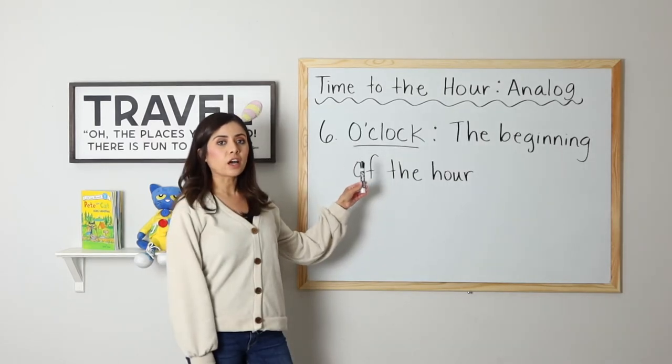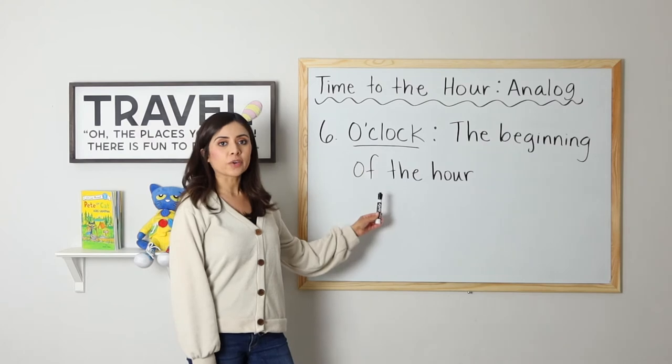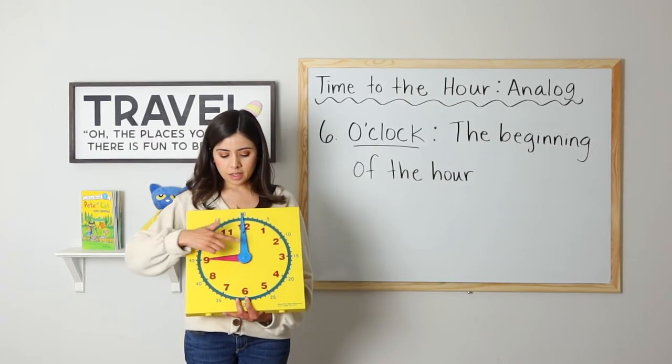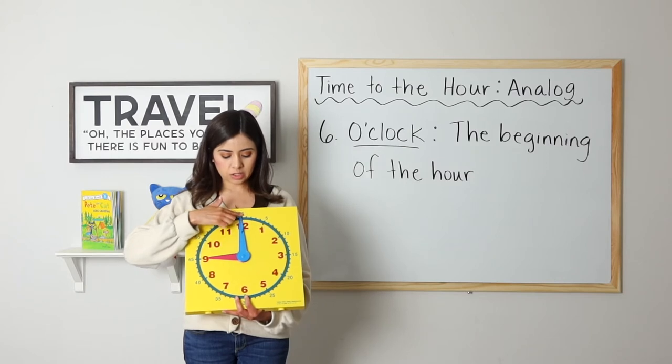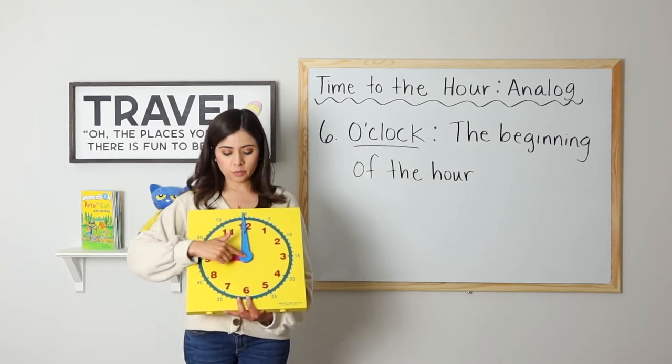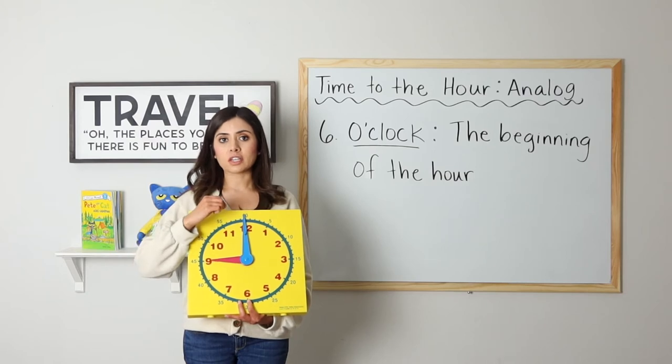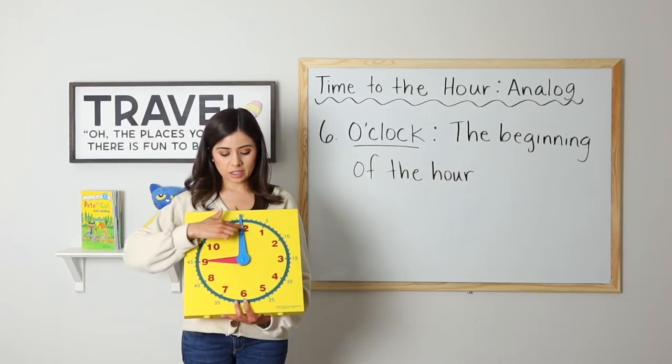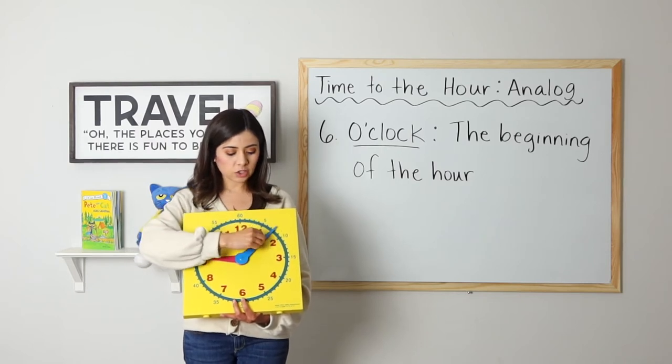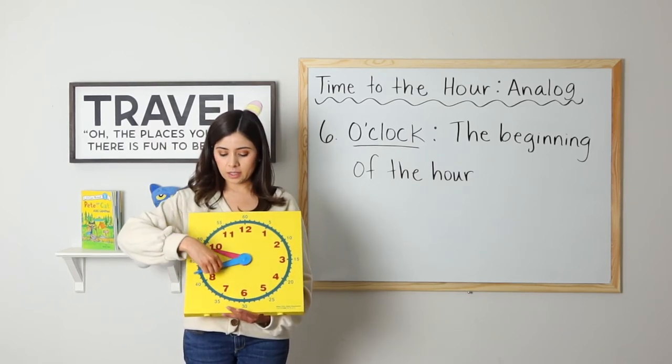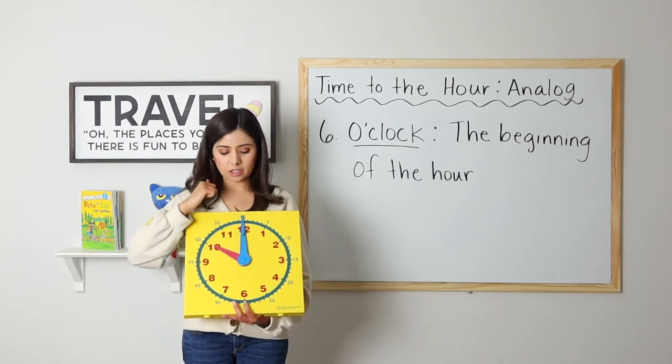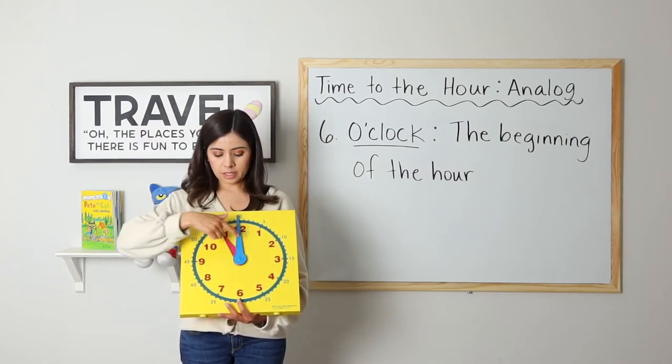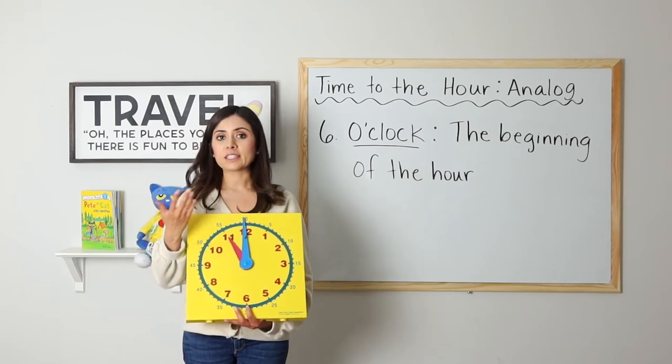Number six, o'clock. O'clock is the beginning of the hour. So as we can see here, the hour hand is pointing to the nine. The minute hand is pointing to the 12. Remember, I said when the minute hand points to the 12, that is the starting point. We start the hour there. So right now it is nine o'clock. It's going to go around all the way. Now it's 10 o'clock. 11 o'clock and so on.